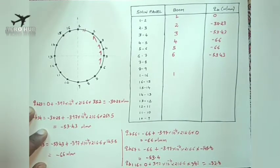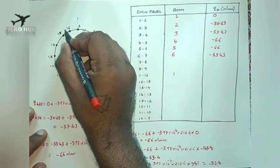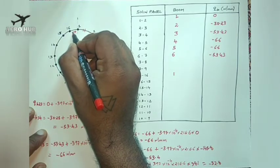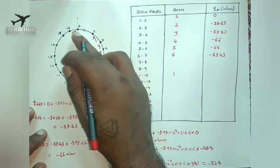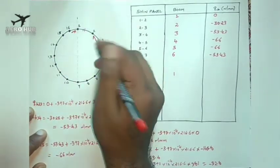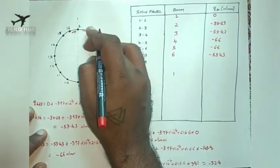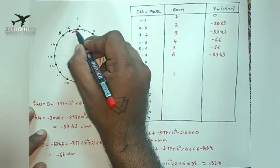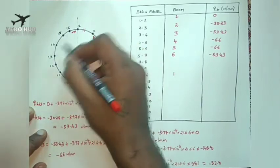The answer for QB1,16 is minus 32.8. We assumed the flow from 1 to 16 but got a negative value, so the flow direction is reversed. From boom 1 to 9 on one side, we get an anti-clockwise flow, and from the other position going from 1 to 16 we get a clockwise flow.